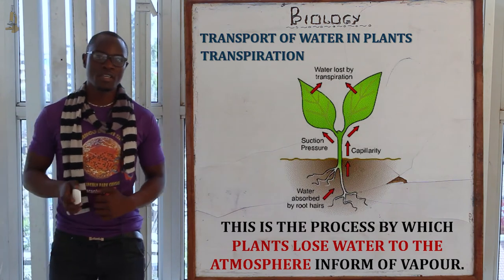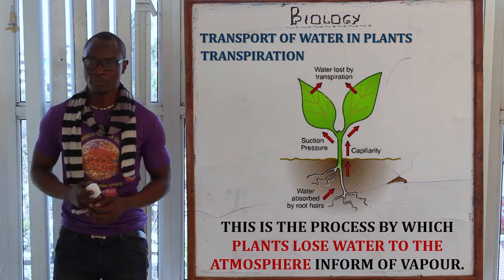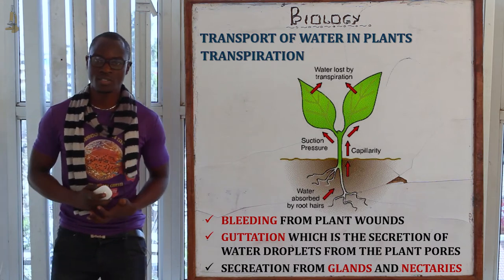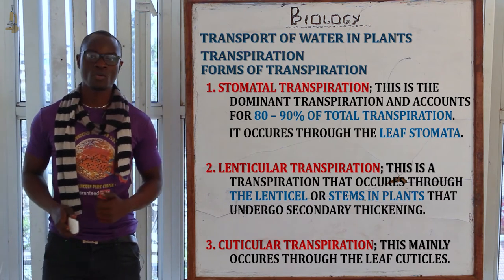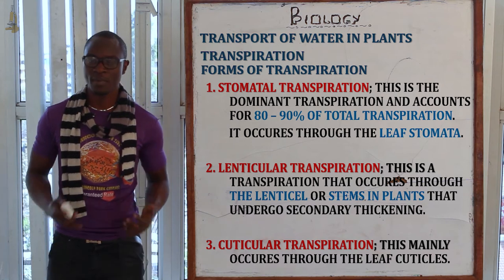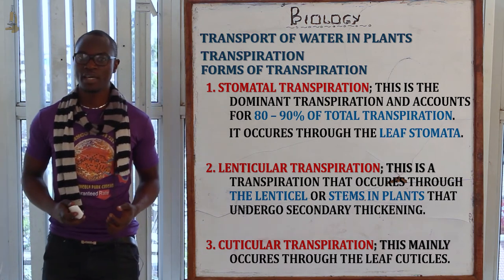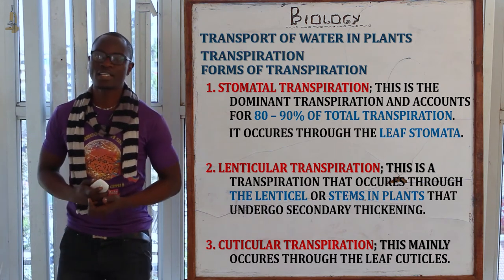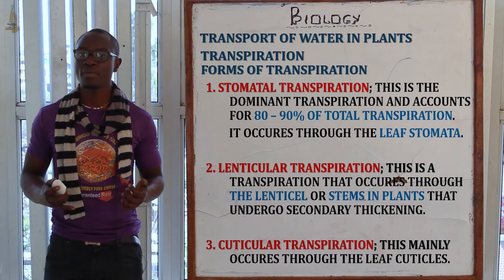Transpiration is the process by which plants lose excess water to the atmosphere in the form of water vapor. Other ways plants can lose water include guttation, bleeding from wounds, and secretion from glands and nectaries. There are three forms of transpiration: stomatal transpiration, which accounts for 80–90% of total transpiration and takes place through the stomata; lenticular transpiration, which takes place through the lenticels on the stem; and cuticular transpiration, through the cuticles of the leaf.